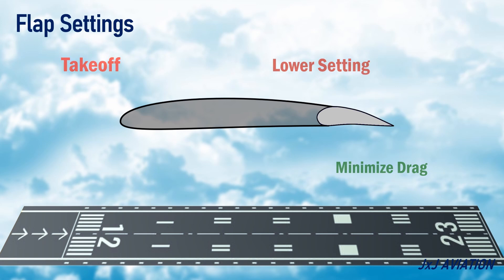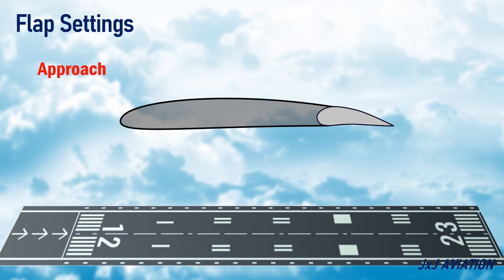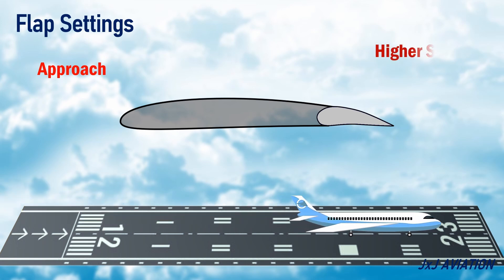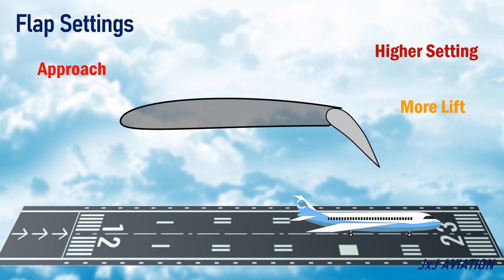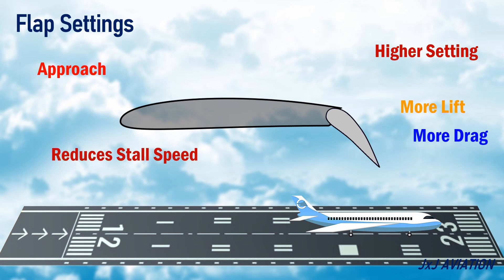During approach, a higher setting of the flaps is selected, or a greater angle of extension of the flaps. This results in more lift being generated, and at the same time the drag also increases, which reduces the speed of the aircraft. By extending the flaps, the stall speed reduces, which means the aircraft can fly safely at lower speeds.